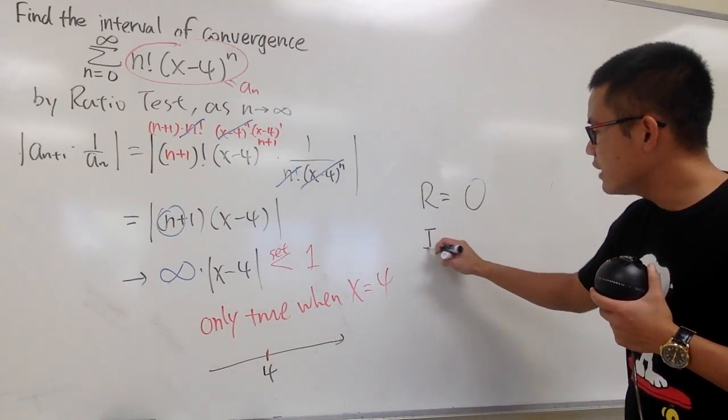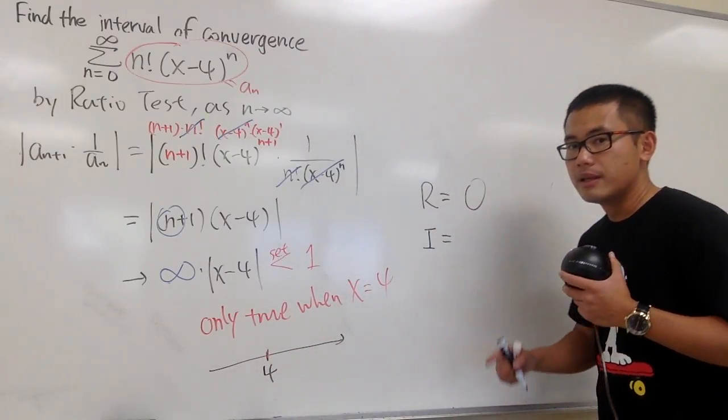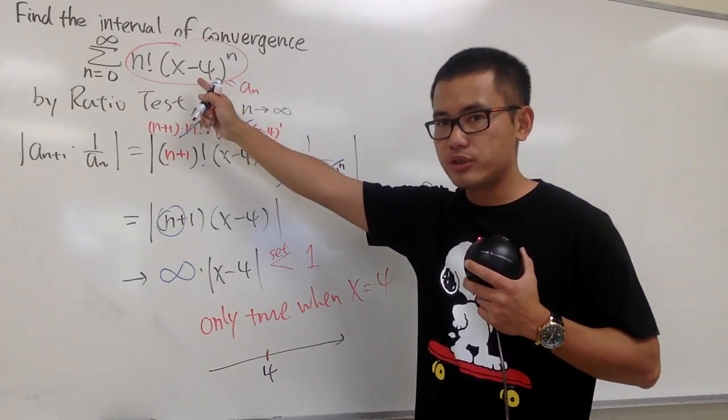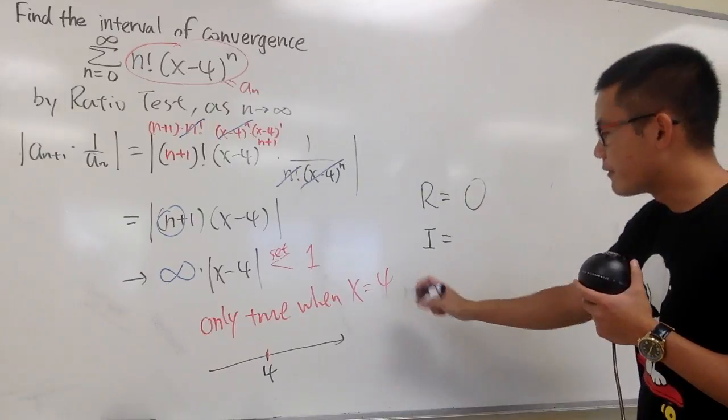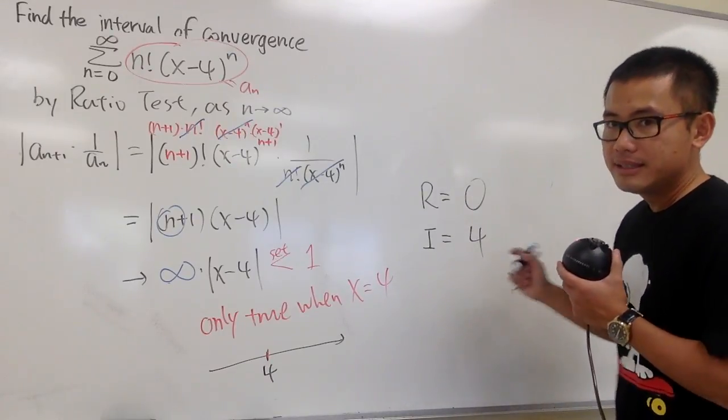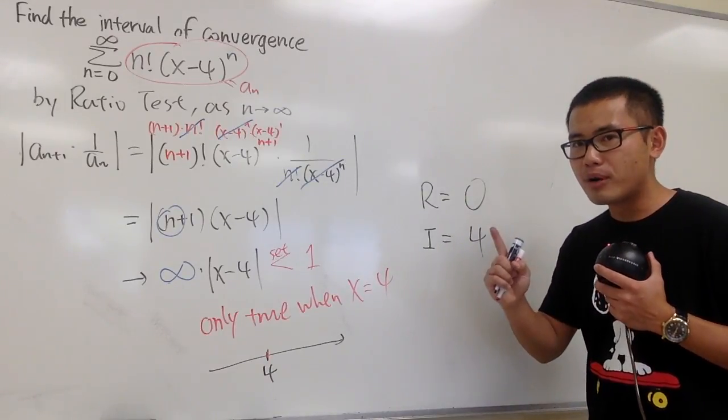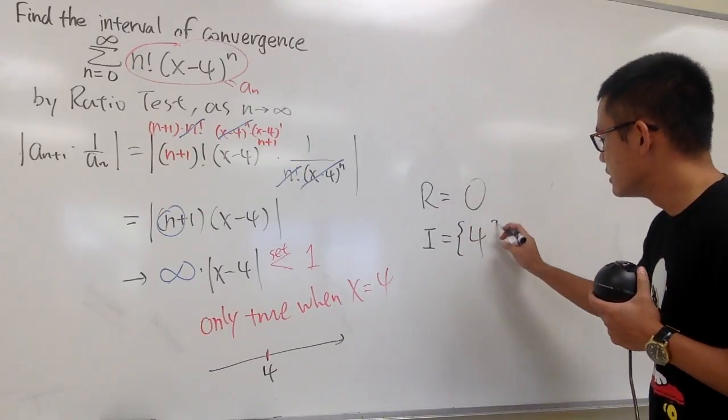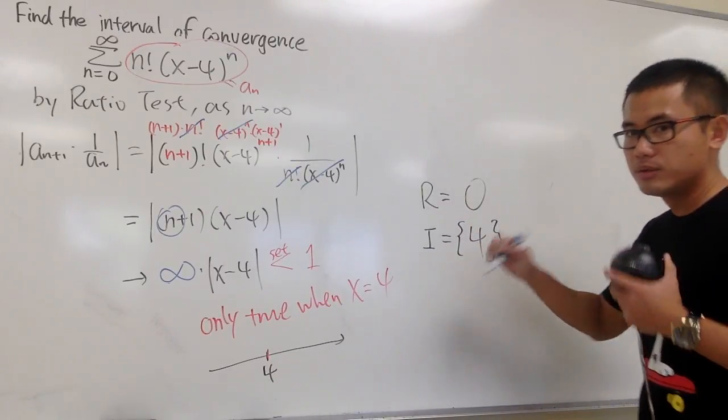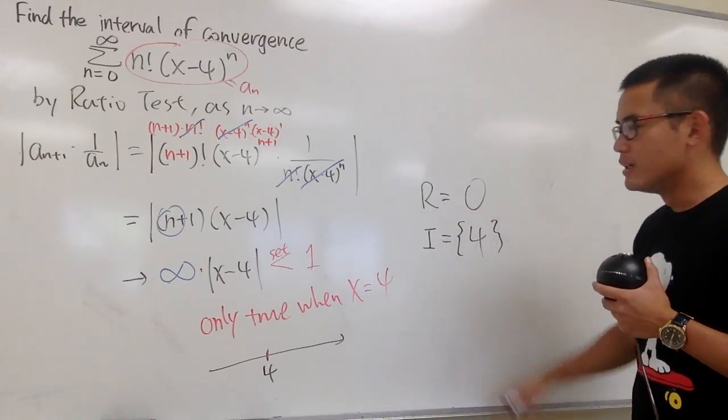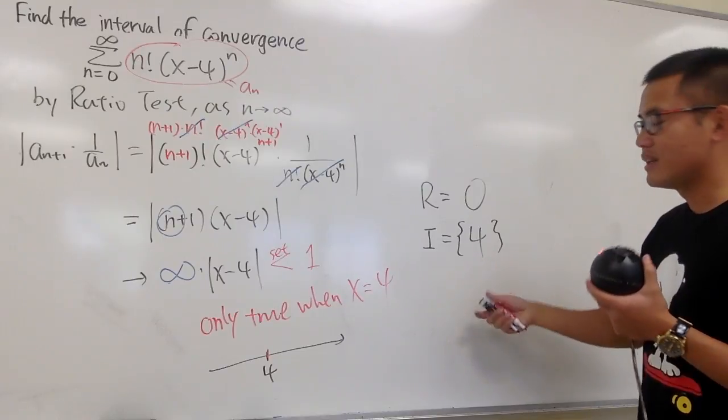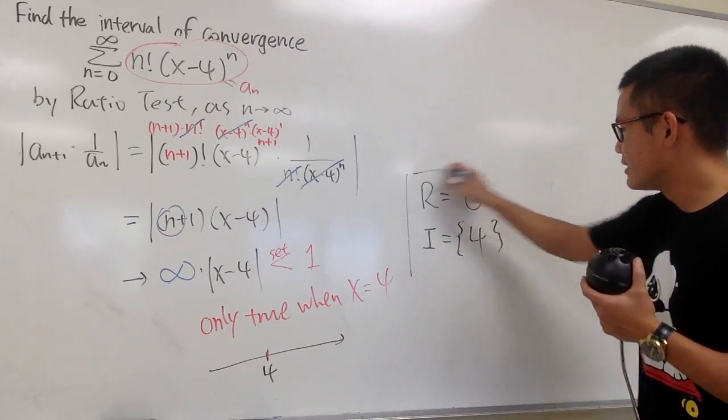In our case, the interval of convergence—we only have one number that will make the original converge. And that number is 4 only. This is just a set of one number, it's not an interval anymore, so I will just put down this is the set of a number. It's not really like an interval, but once again, I will just write it down like this, as usual.